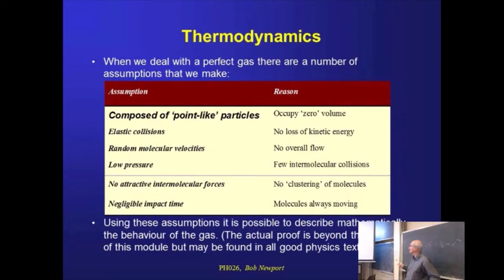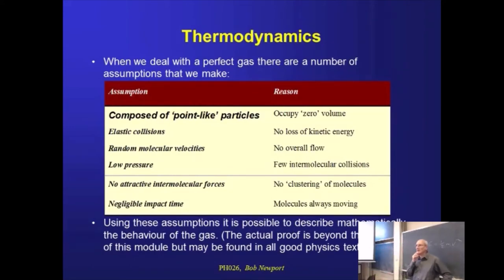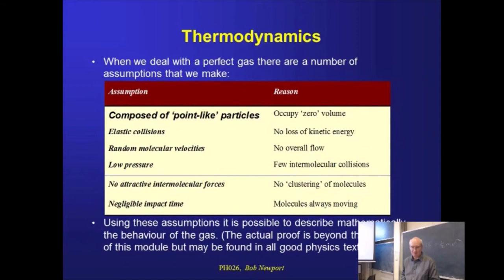We've already talked about elastic collisions — so there's no loss of kinetic energy in these, even though the directions and momenta might actually change. Random velocities shouldn't trouble you too much having just seen those simulations. One important consequence is that we don't get all the air molecules piling up in one corner — it would be fairly disturbing if that was the case. So they are random — not only random in terms of the magnitude of the velocities, but also in direction. We don't get wholesale movement of mass of gas from one place to another; it is a randomised process.